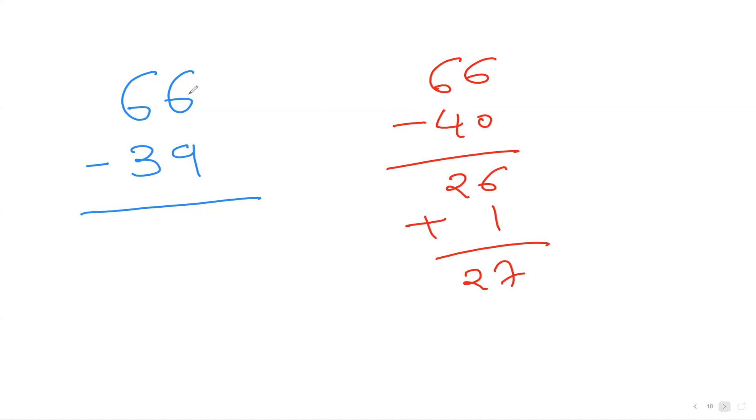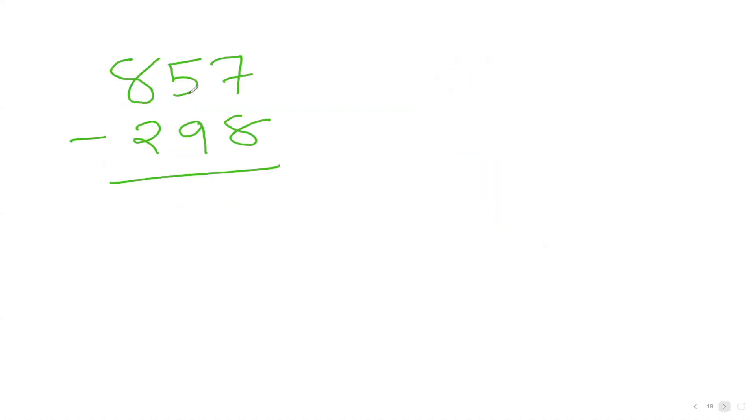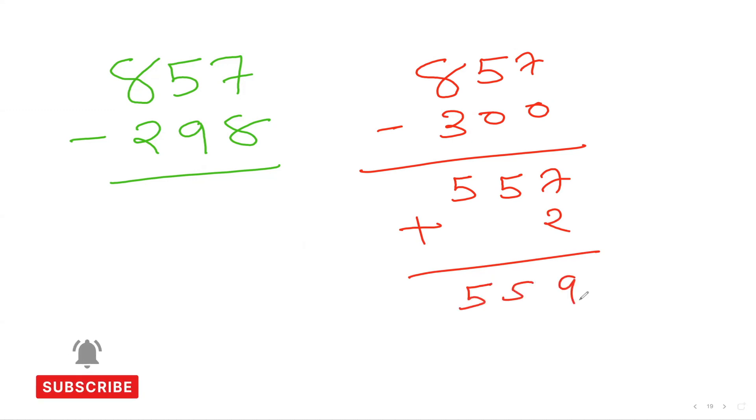Now you can see a bigger number: 857 minus 298. We can see that 298 is closer to 300, so I'll do 857 minus 300, which gives us 557. But I subtracted two more numbers, so I'll add that two, which gives me 559. So I can subtract 300, which is super easy, and then add two.